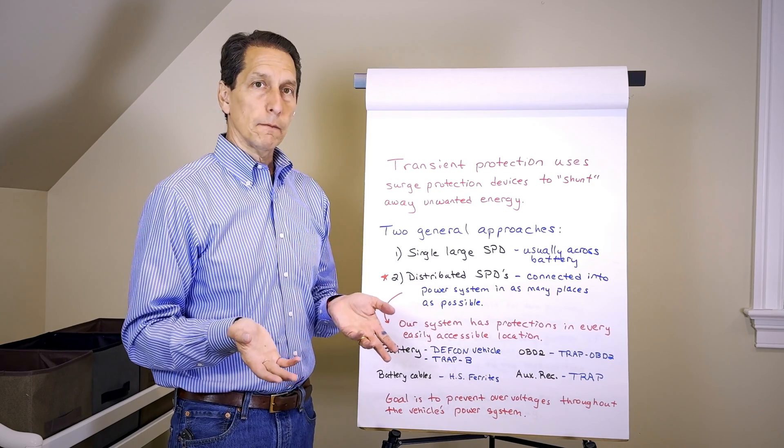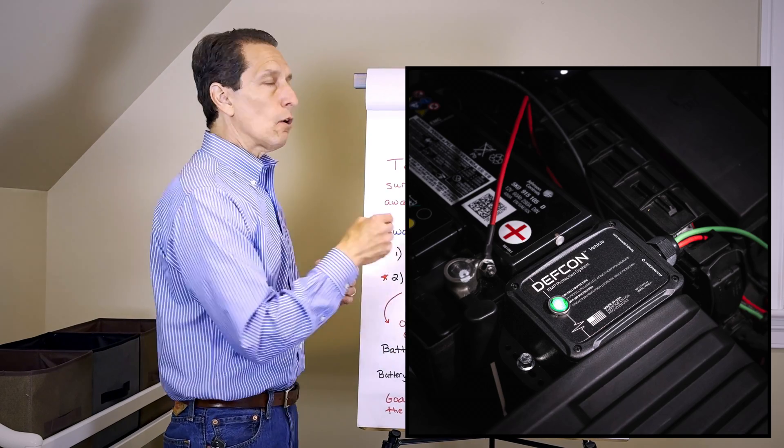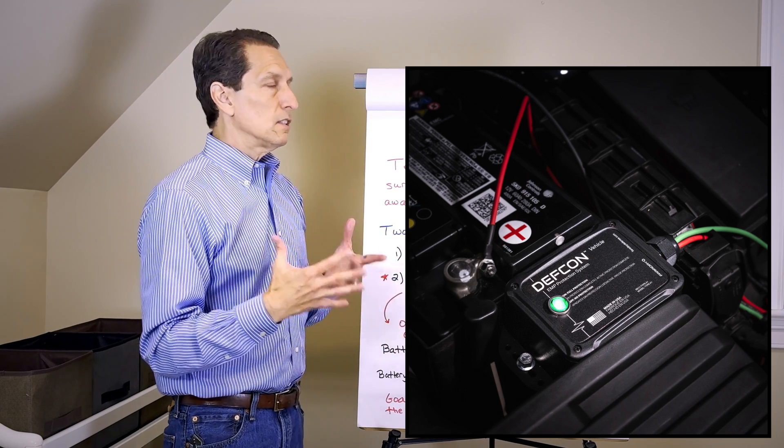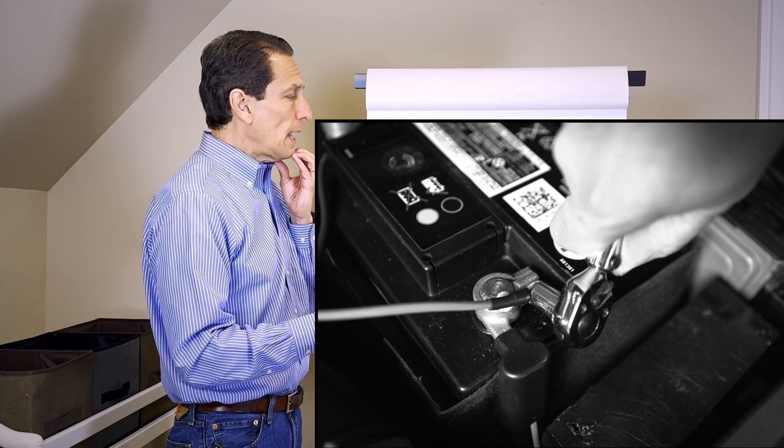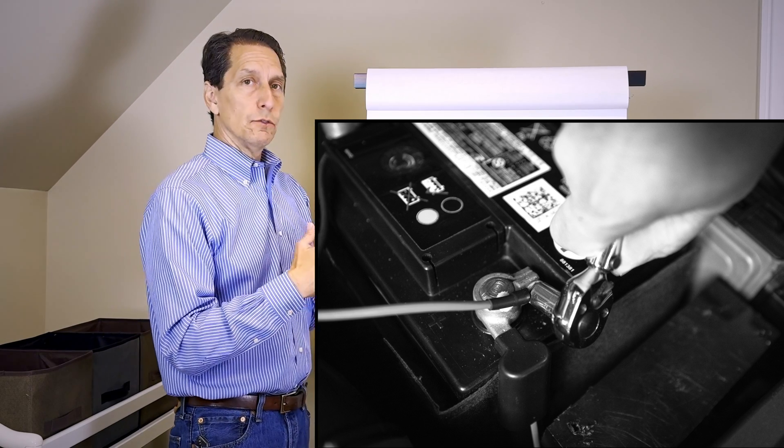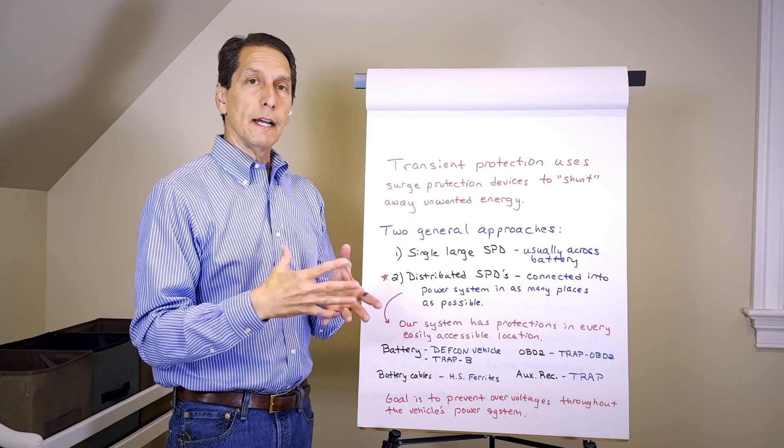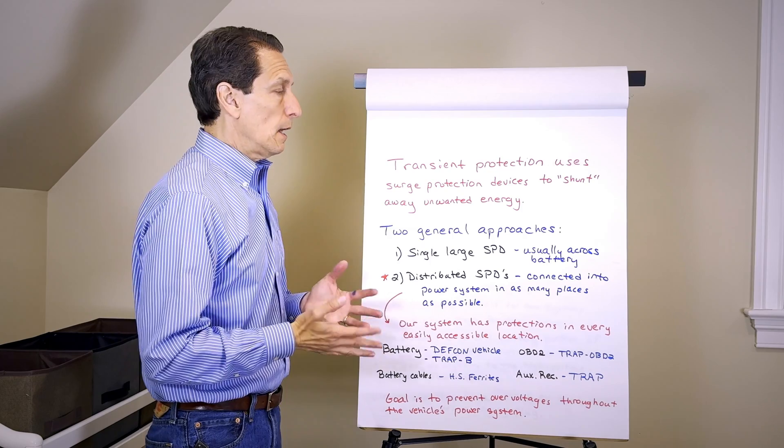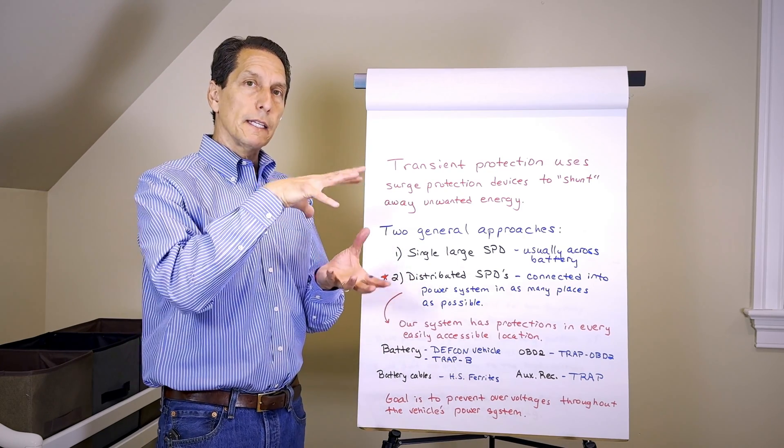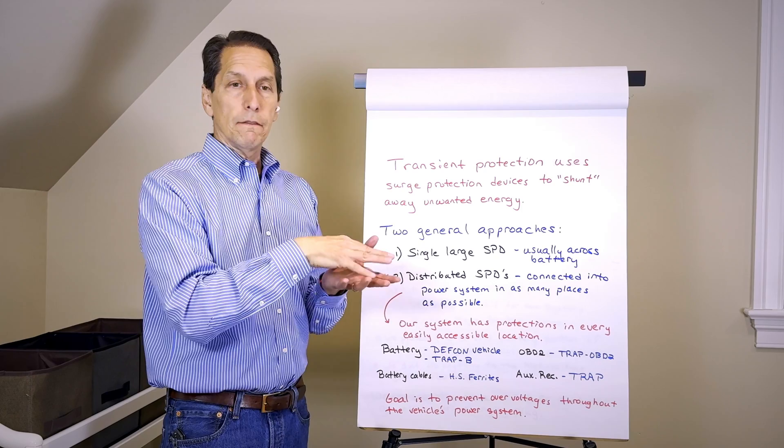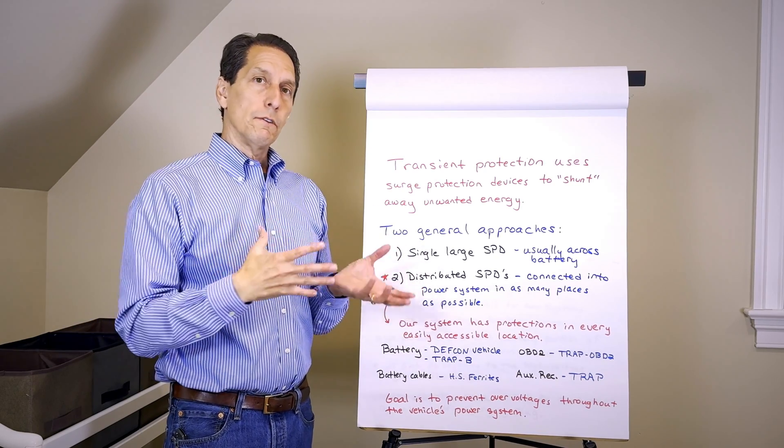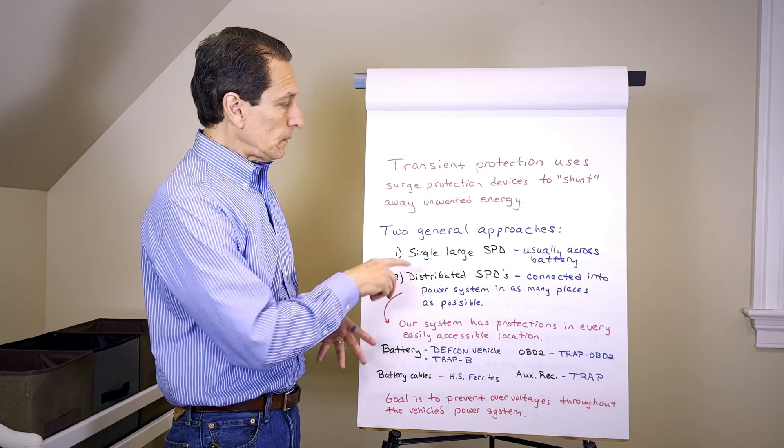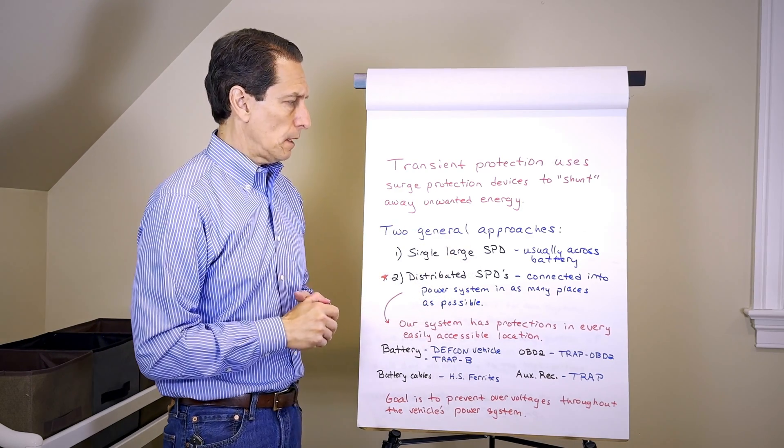There are two general approaches in the marketplace. The first is to use a single large surge protection device, almost always attached across the battery. If the voltage at those nodes gets high enough, it will turn on and shunt away the energy. That works, but the limitation is you're really only protecting at that point near the battery. If you get too far away from that connection point, it's hard to see how you're limiting the voltage that's coupled there.